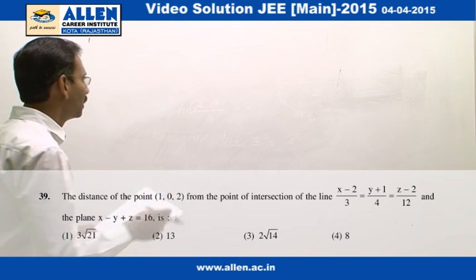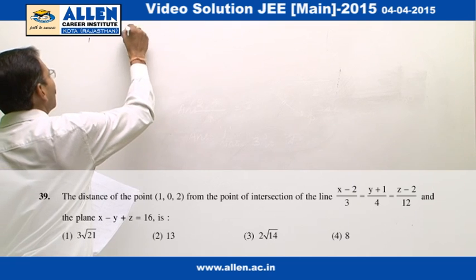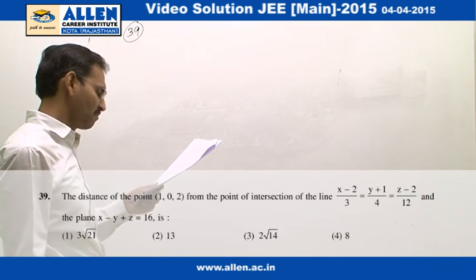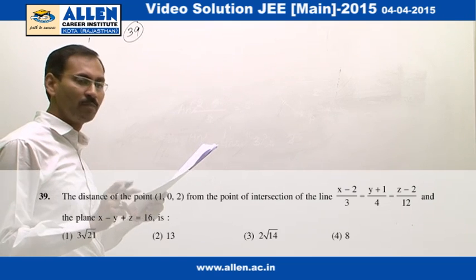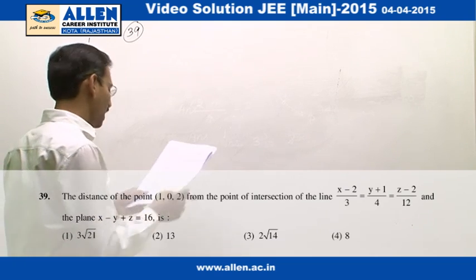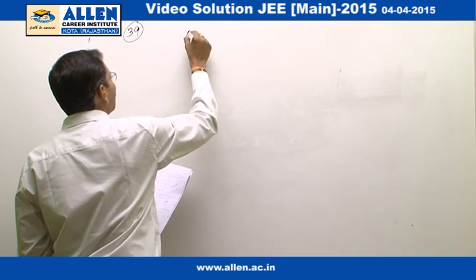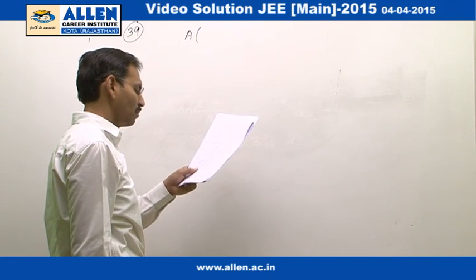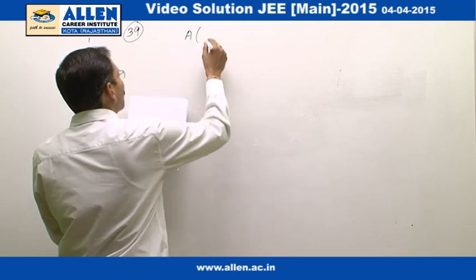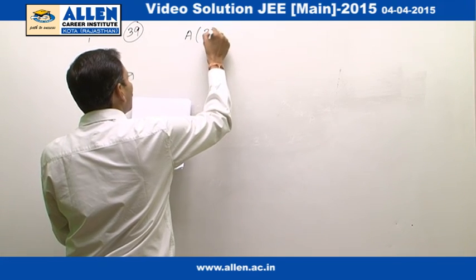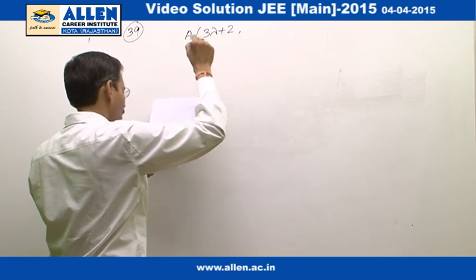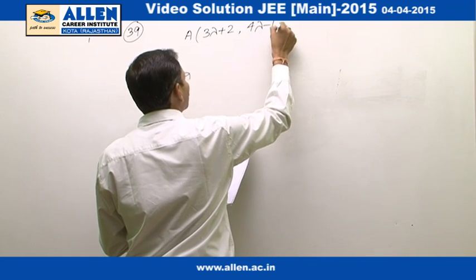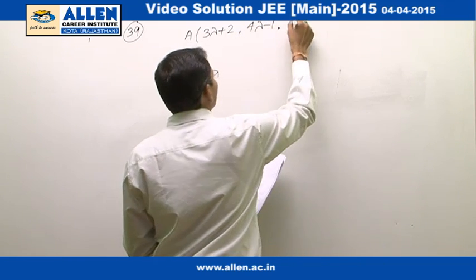Question number 39. Let us find out the point of intersection of the line with the plane. For that, we will assume a point A on the line, equating the ratio to lambda. The point will be 3 lambda plus 2, 4 lambda minus 1, and 12 lambda plus 2.